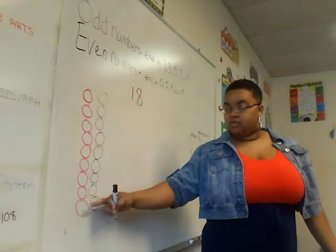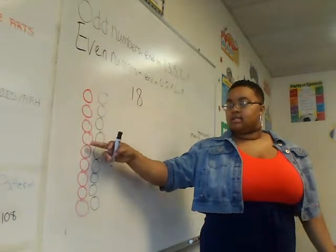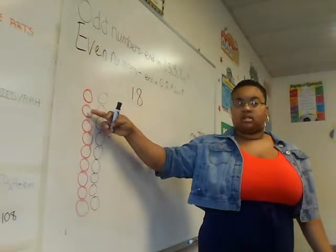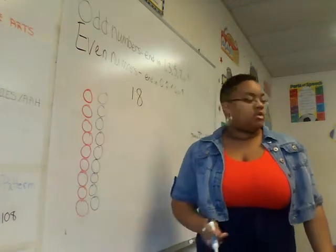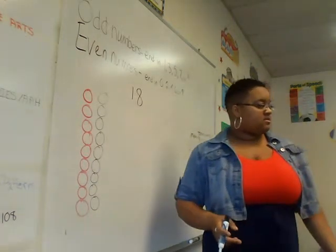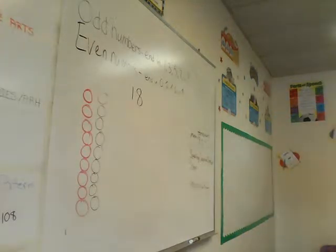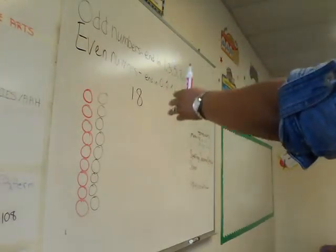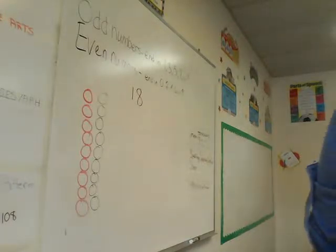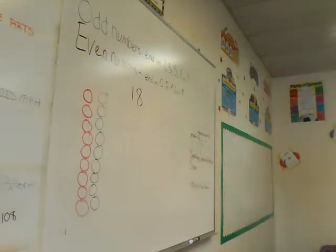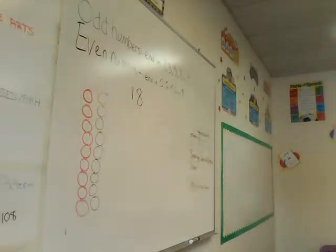18 — two, four, six, eight, ten, twelve, fourteen, sixteen, eighteen. Good job. So do we have an even amount of pairs? Yes. So 18 is even, correct? Yes. So since 18 ends in an eight, it is what type of number? Even. Good job. So each student in Evan's class has a partner.